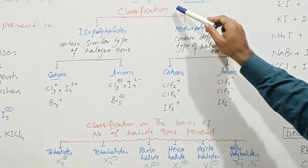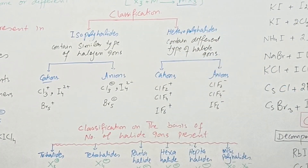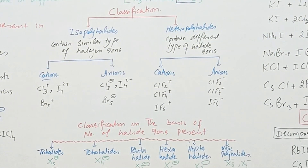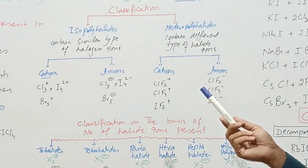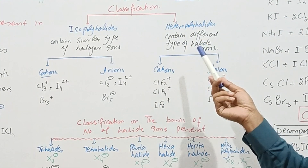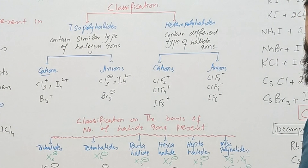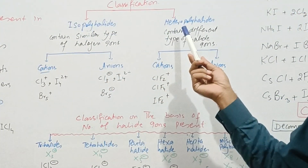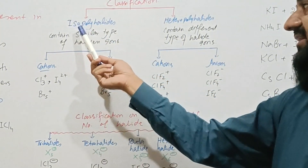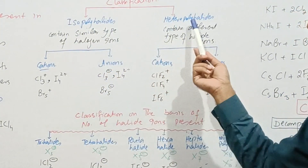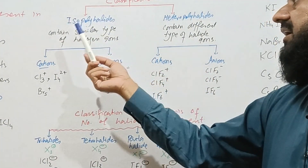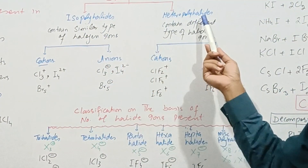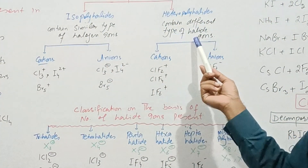Now let's see the classification of polyhalide compounds. Since the major component is the halide ion or polyhalide ion, we classify them using halide ions. There are two main classes: isopolyhalide and heteropolyhalide. Isopolyhalide contains similar types of halogen ions, while heteropolyhalide contains different types of halide ions.